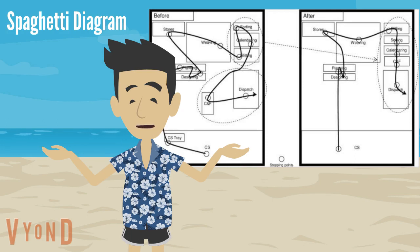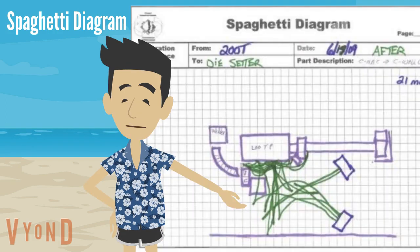A spaghetti diagram is a great tool to visually indicate transport or motion waste. In this example, it can be a powerful tool in a kaizen event, an improvement activity, or a project.